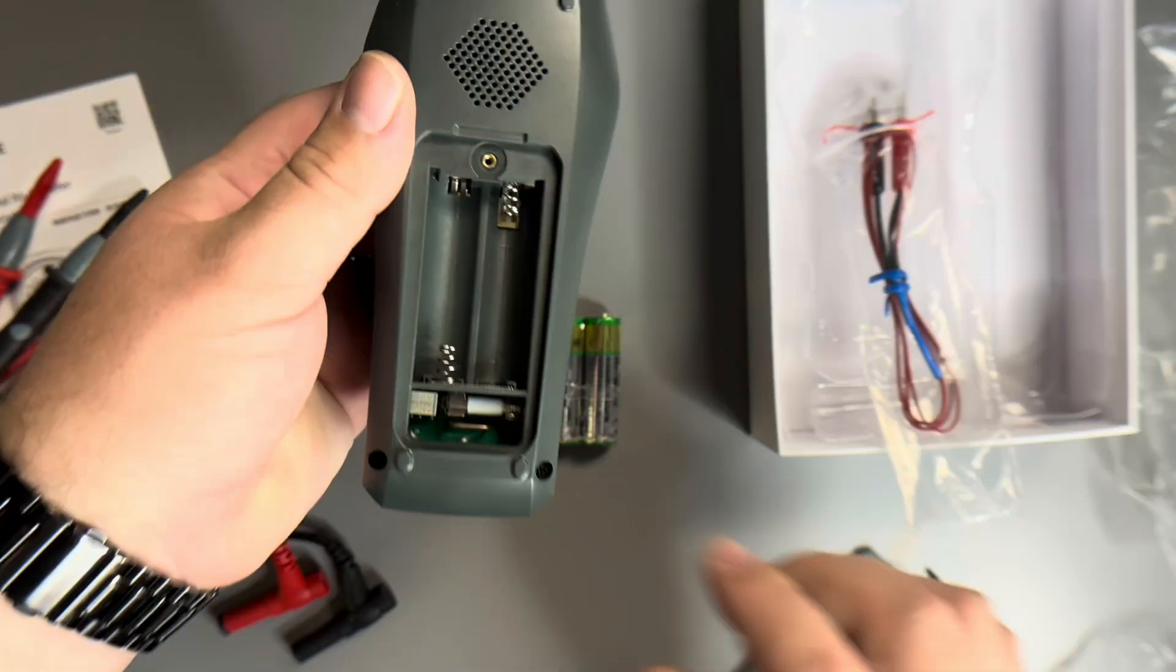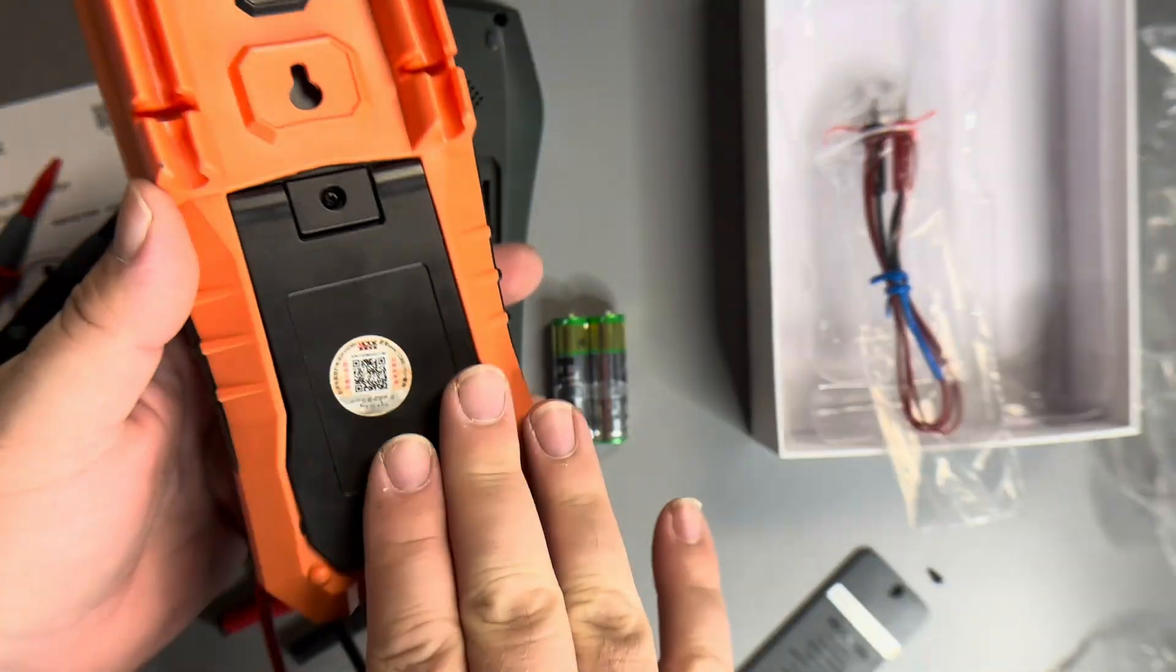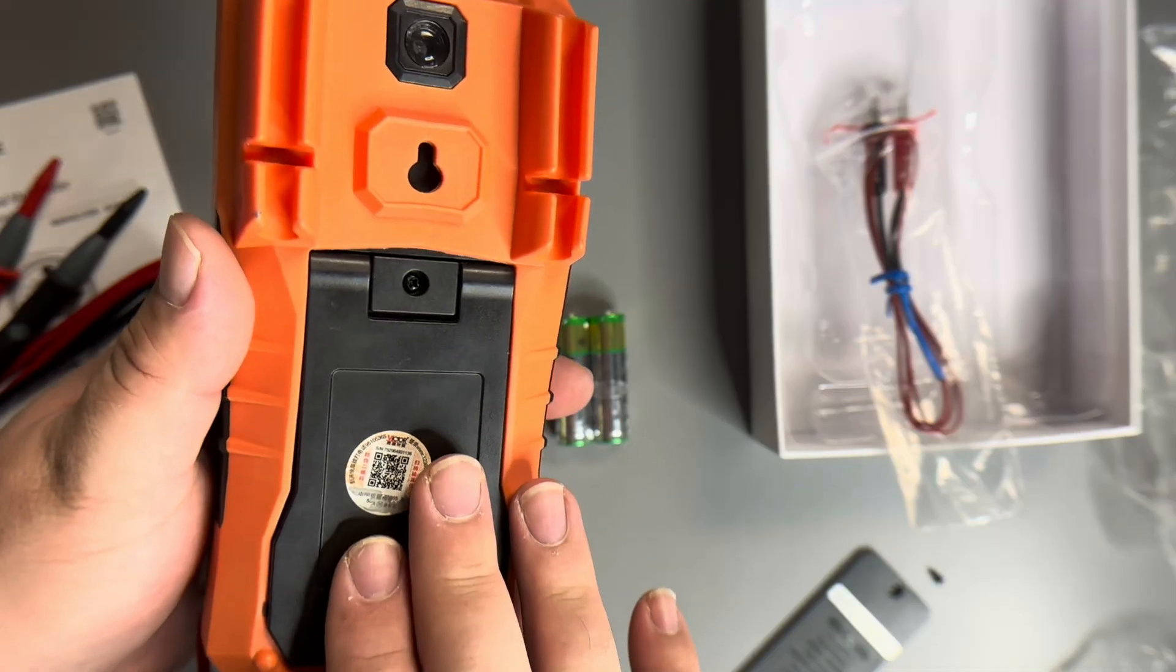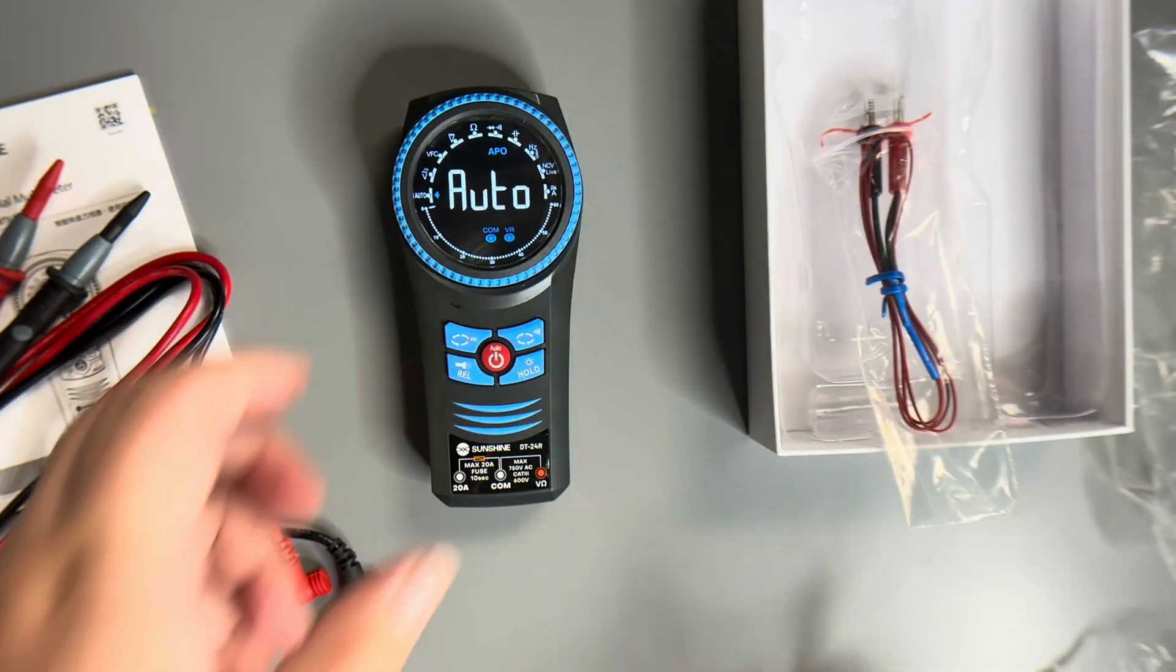Go ahead and install the batteries, which I will say it is nice to have AA batteries, because almost all of the ones that I've used use the nine volt batteries. Put back the screw. It already came on.